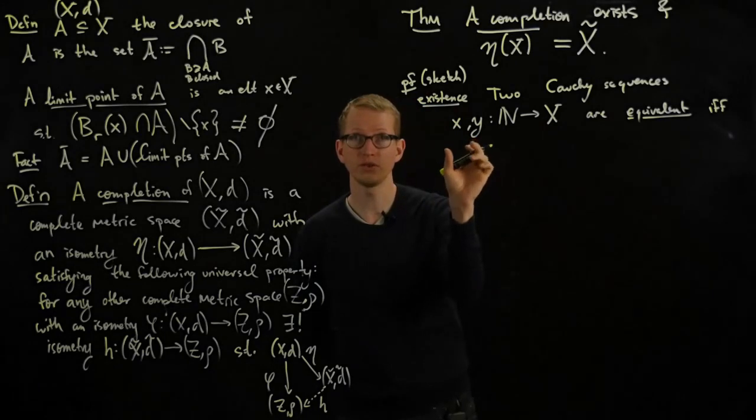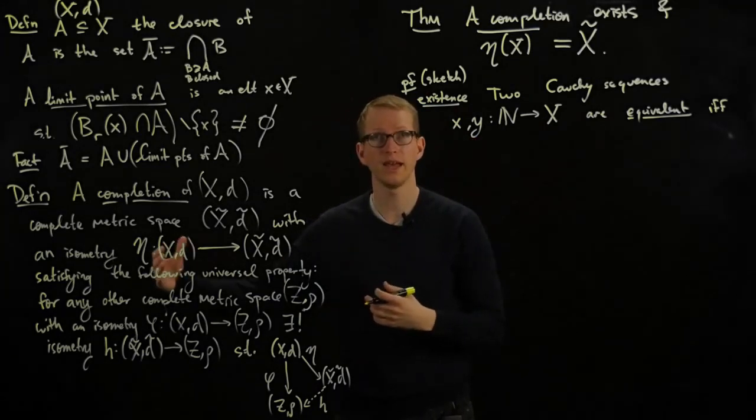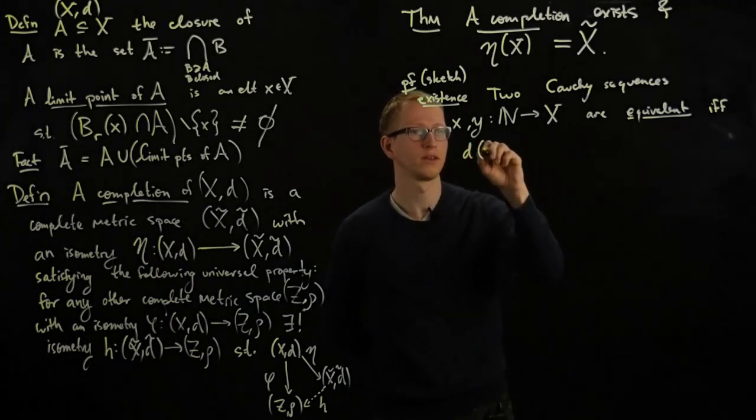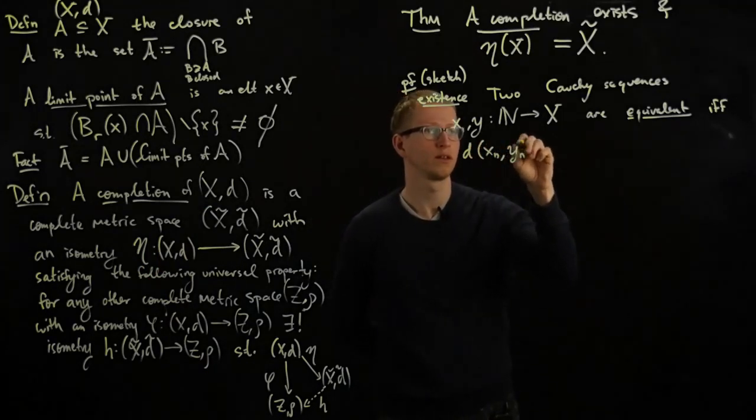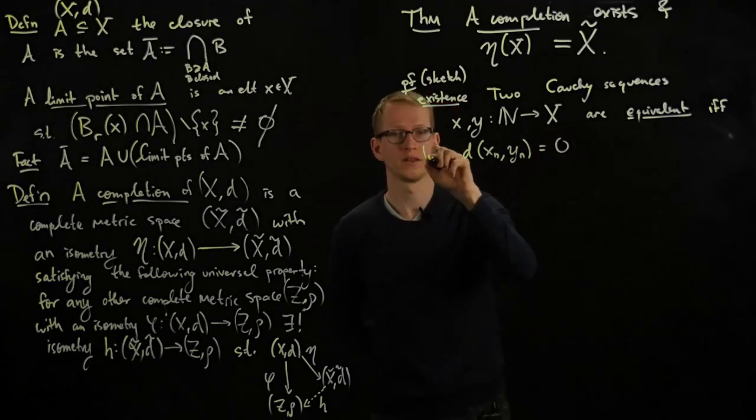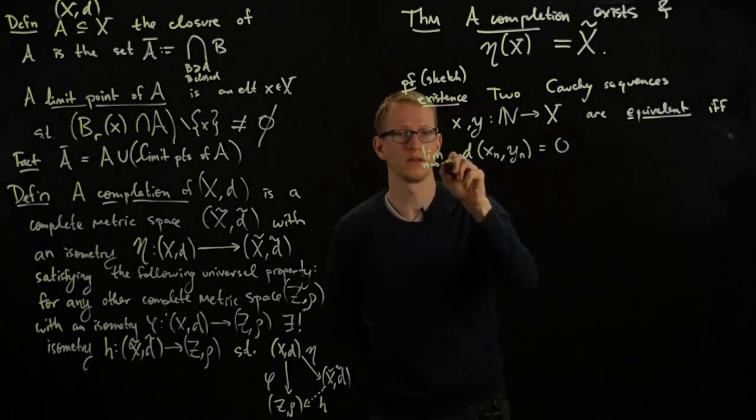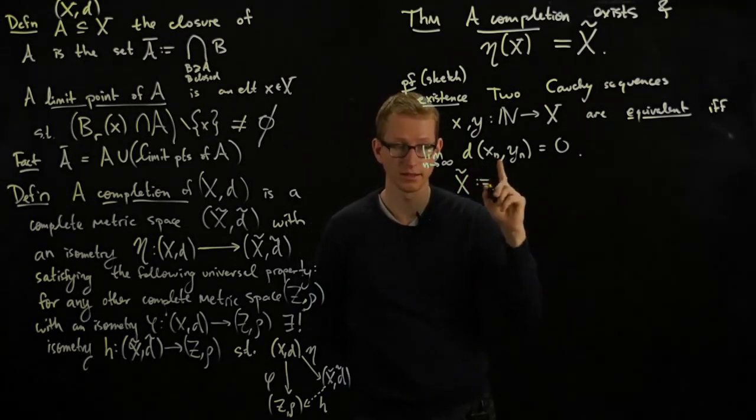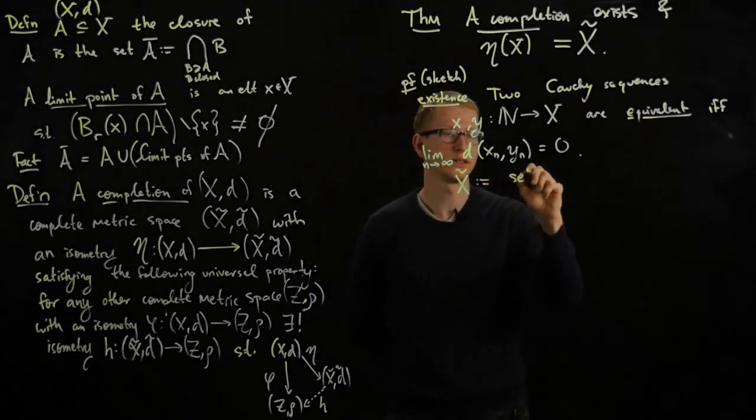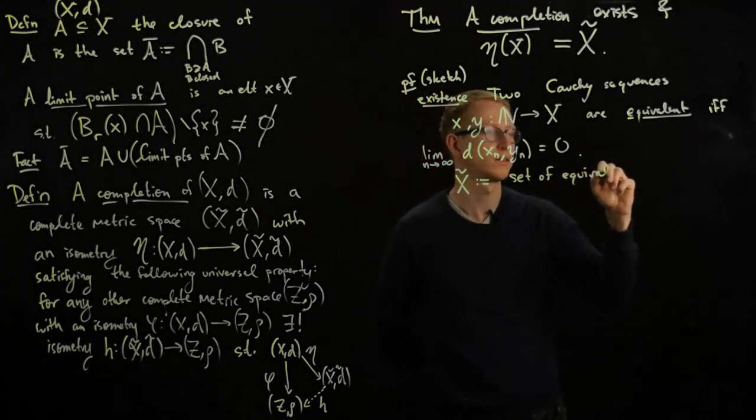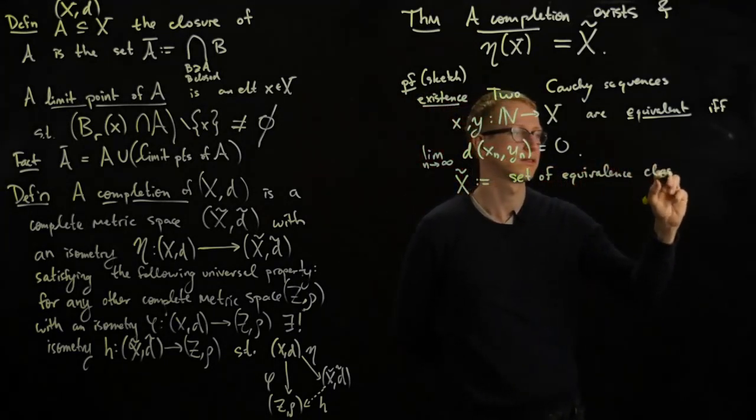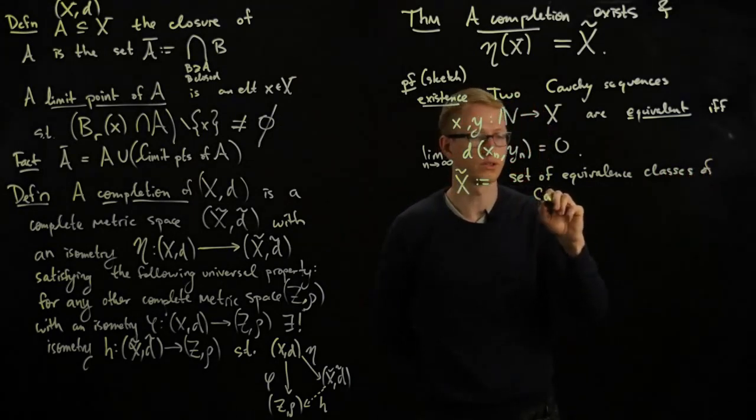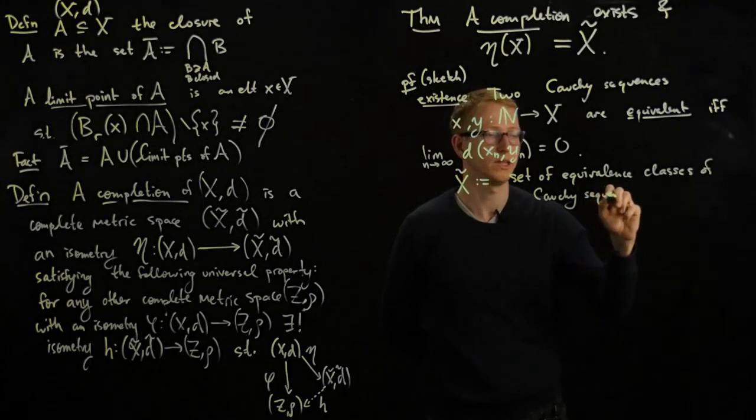the distance between these two elements at the tail end of the Cauchy sequence eventually tends to 0 as we take the limit. And then,